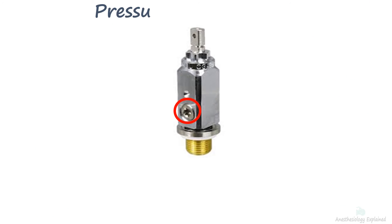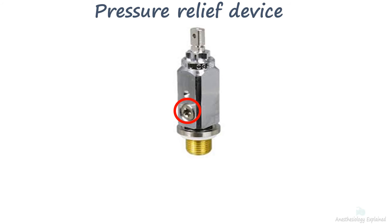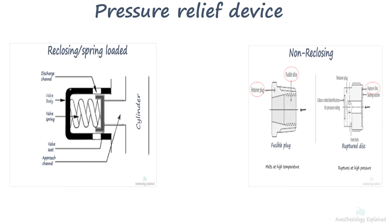Pressure relief devices are installed on cylinders with the aim of venting the cylinder contents to the atmosphere in case the pressure within the cylinder reaches a dangerous level, often due to elevated temperatures or overfilling. There are two types of pressure relief devices: reclosing and non-reclosing.